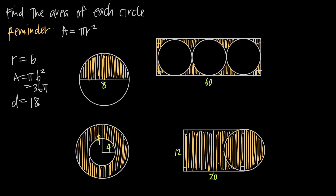What if we're given a problem where the diameter of the circle is equal to 18? The diameter is the full width of the circle, and the radius is half the width. So if I have a diameter of 18, that means I have a radius of 18 divided by 2, or a radius of 9. If my radius is 9, I can plug into my area formula: pi times 9 squared. 9 squared is 81, so I get 81 pi.